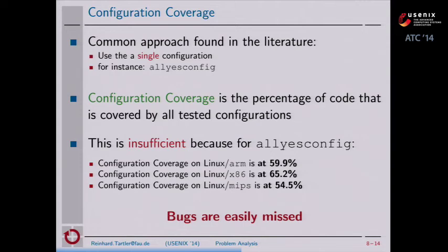This turns out to be insufficient. We conducted an analysis showing the configuration coverage — the percentage of code covered by a given set of configurations. If we analyze the all-yes configuration coverage for Linux, we see that it depends on the user architecture, and it is in the range of 50 to 65 percent. On ARM, about 60 percent; on x86, about 65 percent; and on MIPS, about 55 percent. The remaining code remains unseen by your static analysis tool, meaning bugs are easily missed.